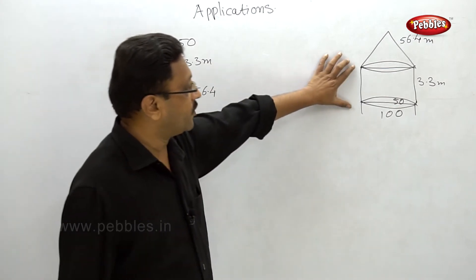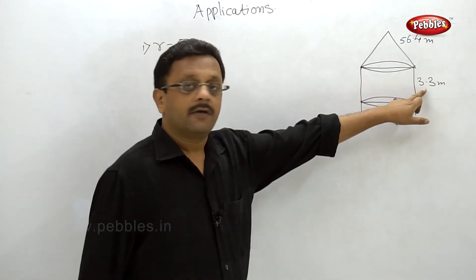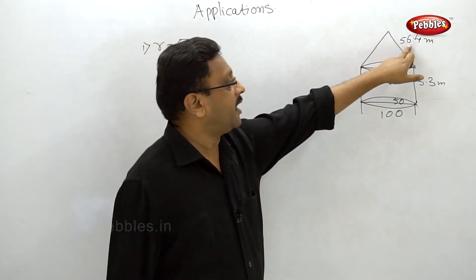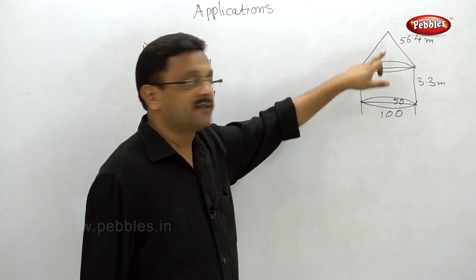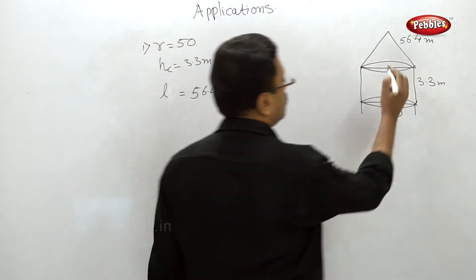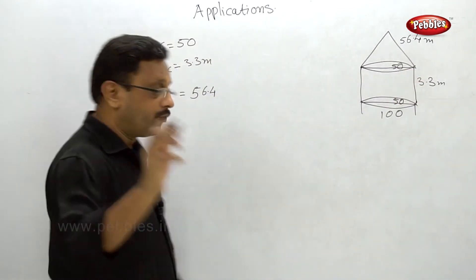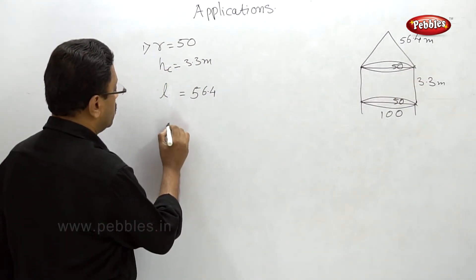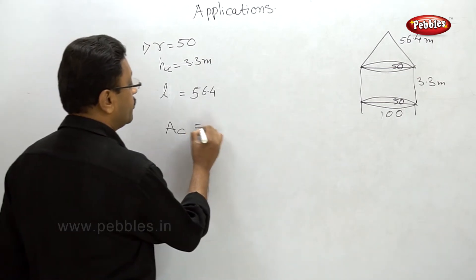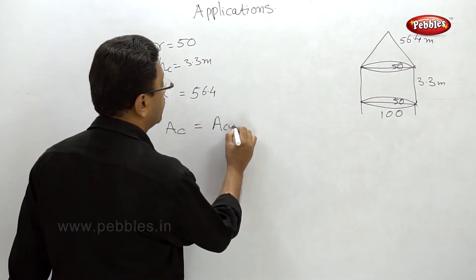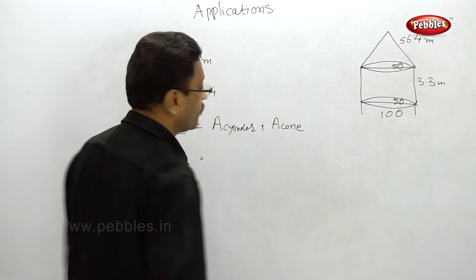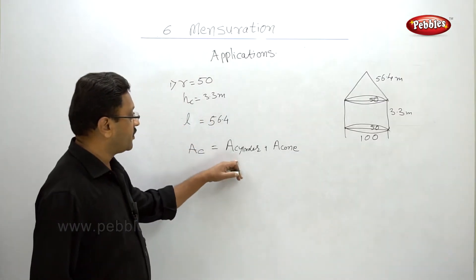We have to calculate two things: first, the curved surface area of the cylinder with radius 50 and height 3.3 meters; then the curved surface area of the cone with slant height 56.4 and radius 50 — the same radius, since the cone sits on top of the cylindrical part. The total curved surface area equals the curved surface area of the cylinder plus the curved surface area of the cone.